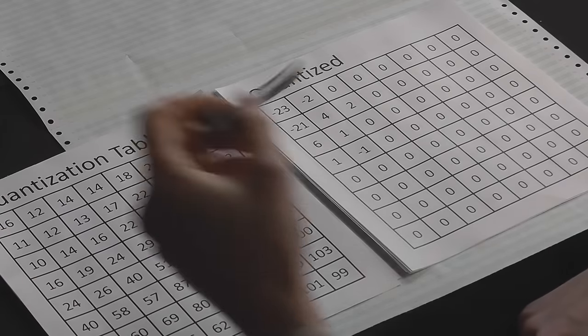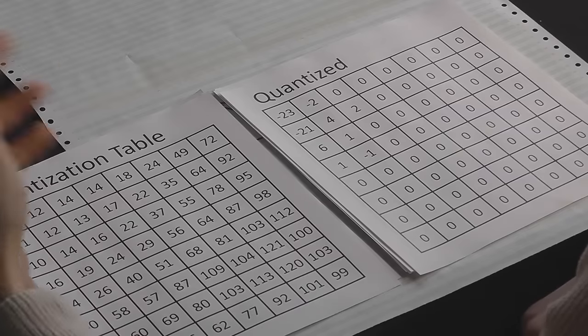And essentially, the argument that we're making is that with just these nine, we can get pretty much the exact same image back. It won't be exactly the same. A couple of pixels will be maybe an intensity level up or down. But these are from 0 to 255. No one's going to see that kind of difference.